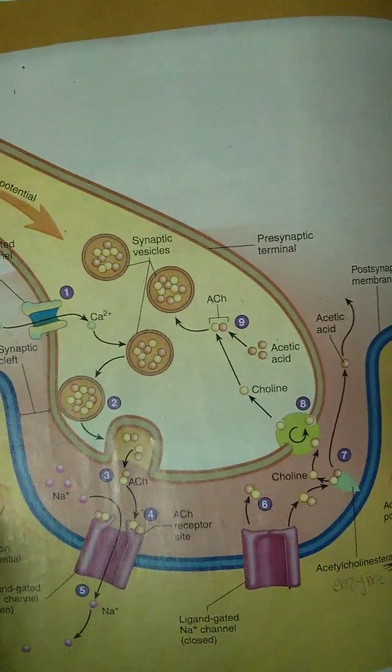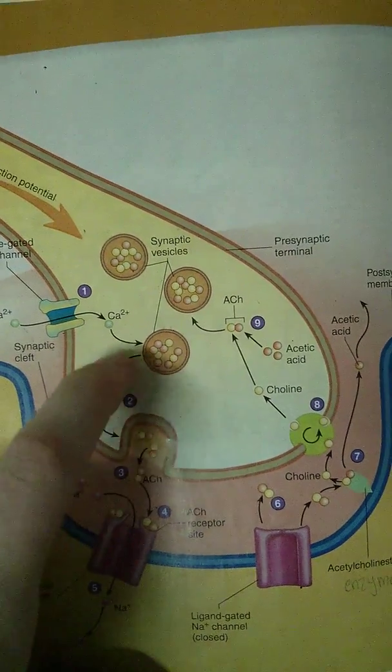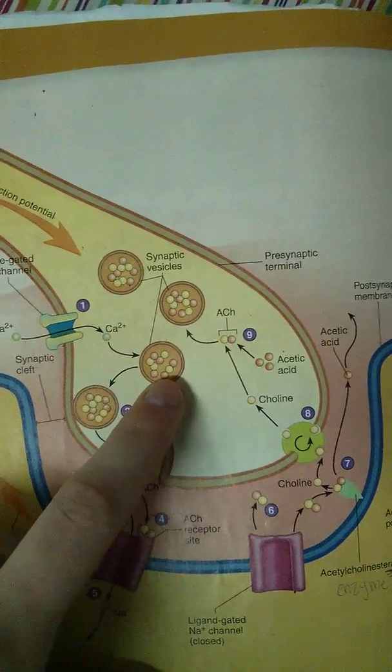but in this case, they're holding what's called ACH, which is acetylcholine. So inside the vesicles, or like these little bubbles, is a chemical called acetylcholine.